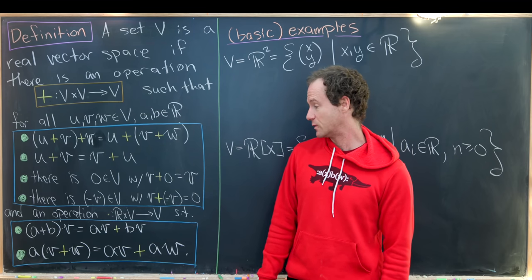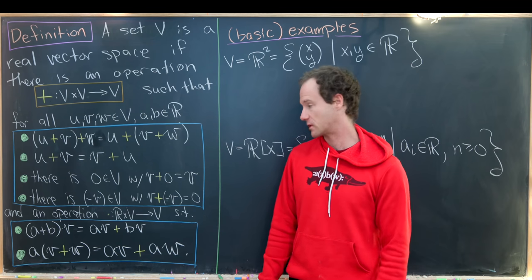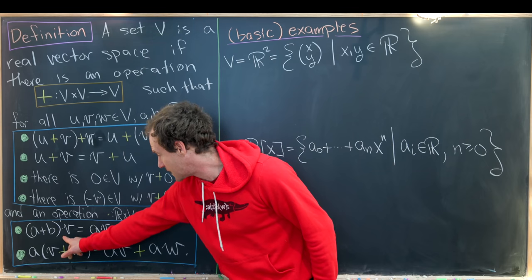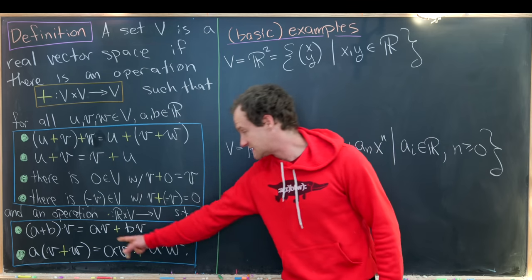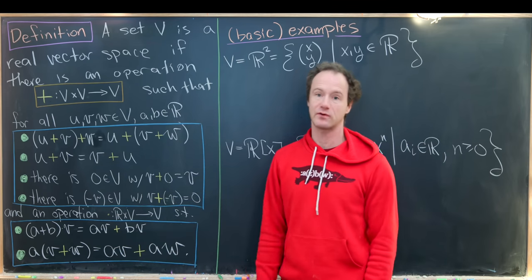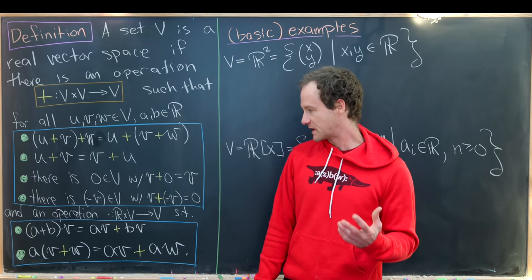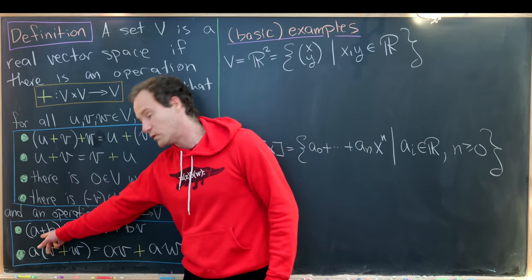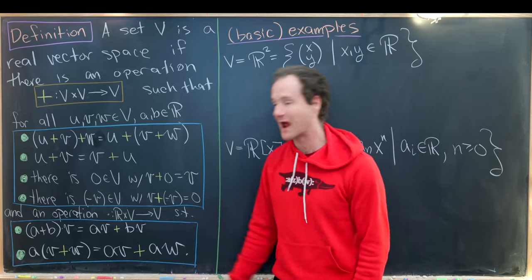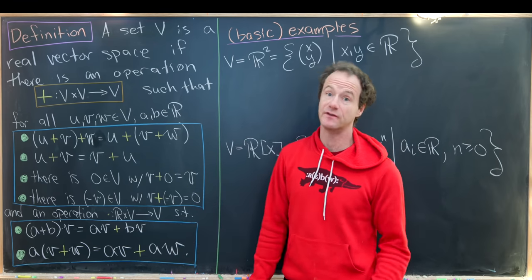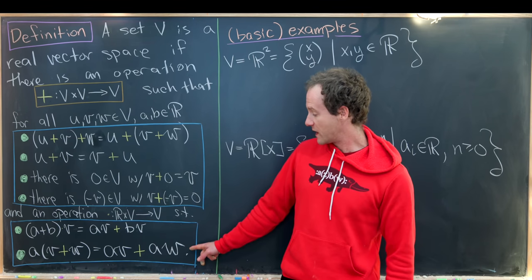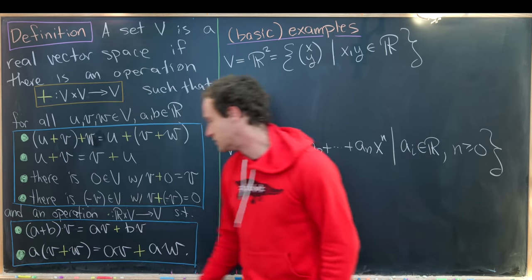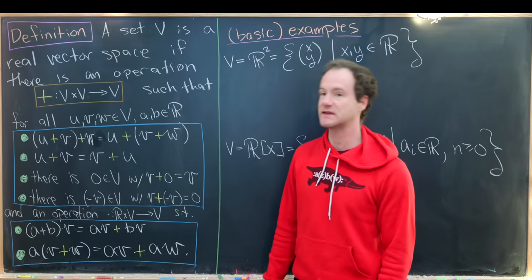Here's where it's nice that we used a different color for vector addition versus real number addition. So if you take two real numbers a and b, then you add them and do scalar multiplication into a vector v, it's the same thing as doing that scalar multiplication separately and then doing vector addition. On the left we have scalar addition — adding two numbers — and on the right we're adding two vectors. That's why I use these two different colors. So this is like a distributive rule. We have another distributive rule: a multiplied into v plus w is the same thing as av plus aw.